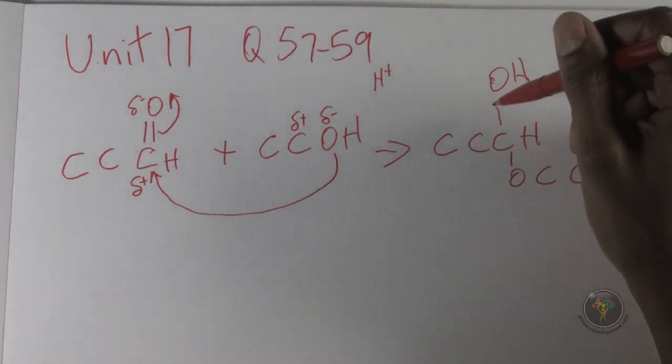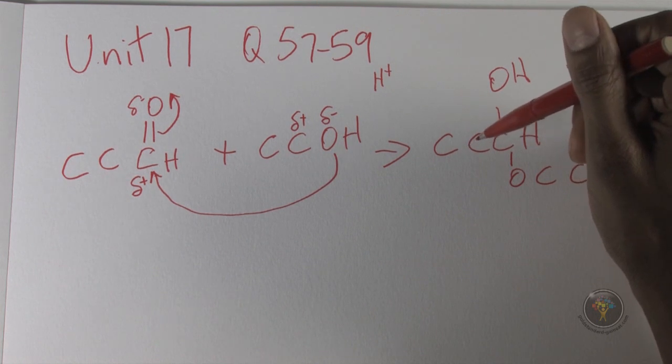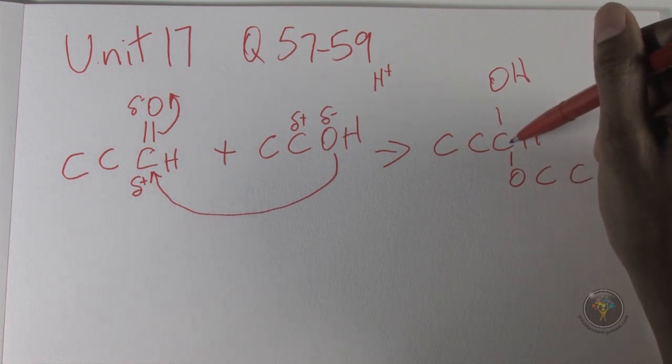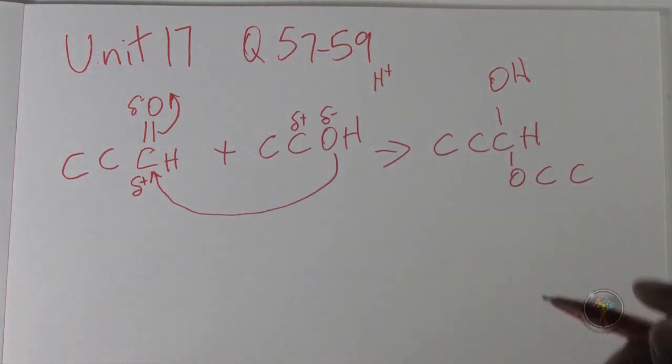But it makes the reaction occur much faster. Now I just have to find this product among the products being shown, and it is answer choice C with one-two-three carbons, OH group, then OCC. So that's answer choice C.